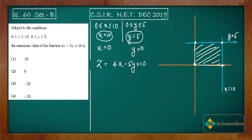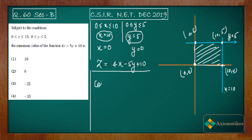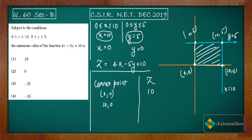The four corner points are: (10, 0), (10, 5), (0, 5), and (0, 0). To find the minimum value, we evaluate z at each corner point. At (0, 0), z equals 10. Substituting (10, 0) into the equation gives 40 plus 10, which equals 50.